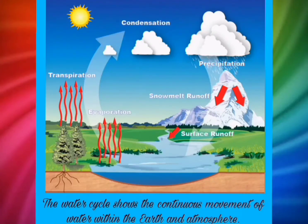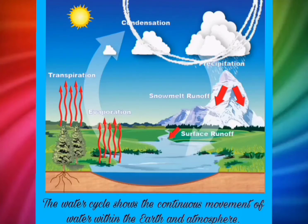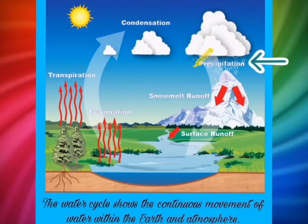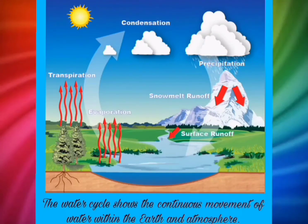Condensation is the process whereby water vapor in the atmosphere is changed into a liquid state. In the atmosphere, condensation may appear as clouds or dew. Finally, precipitation is the result when the small condensation particles grow too large.